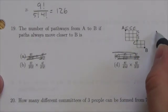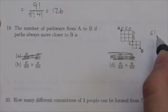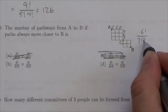So that would be 6 factorial, okay, over 3 factorial, 3 factorial.